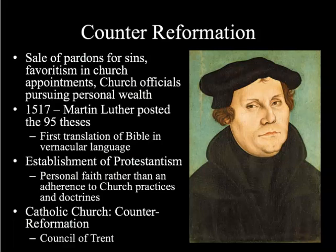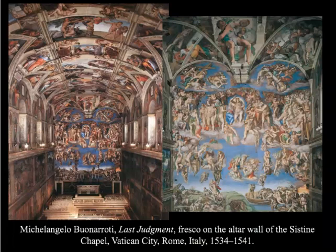This established Protestantism — personal faith rather than adherence to church practices and doctrines — and then the Catholic Church has a Counter-Reformation as it tries to fight the Reformation and the occurrence of Protestantism, bringing people back to Catholicism with the Council of Trent. So you have two sides of the coin: the Catholic Church desiring to bring people back, and Protestants fighting against the Catholics and their use of wealth.